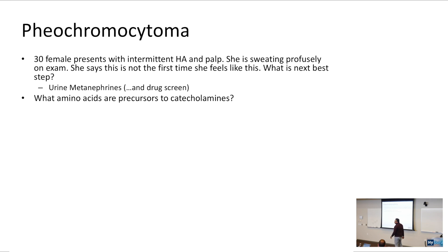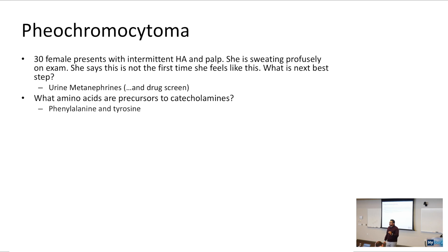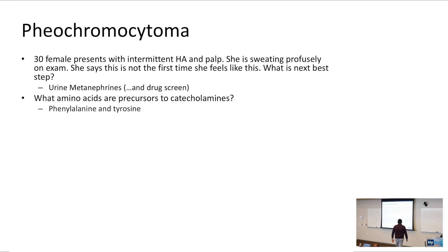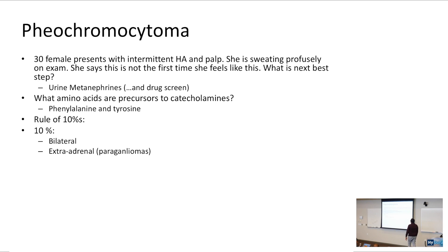The amino acid precursors to the catecholamines are phenylalanine and tyrosine — very high yield. Anytime they ask for the biochemical amino acid precursor to a hormone, that's how they tie in endocrine and biochemistry. Pheochromocytoma follows the rule of 10: 10% are bilateral, 10% are extra-adrenal, and 10% can be malignant.